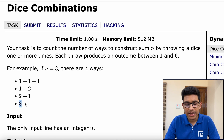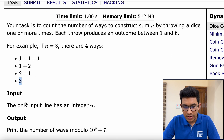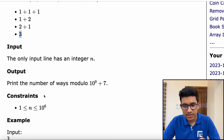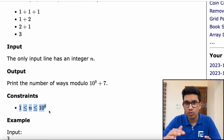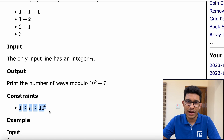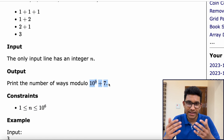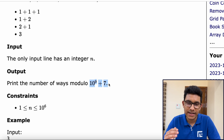So essentially there is no limit on the number of times you can throw this dice, but ultimately you just want to find out the total number of ways to construct this integer n. The constraints on n are from 1 to 10 to the power 6, and they also want us to print the answer by taking a modulo with 10 to the power 9 plus 7.